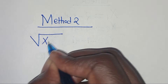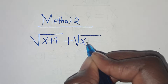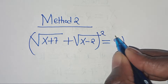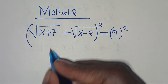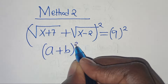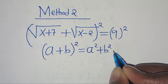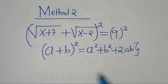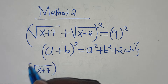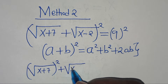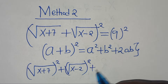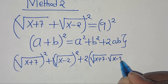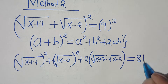In Method 2, we have the square root of x plus 7, plus the square root of x minus 2, equals 9. The first step is to square both sides. Using the algebraic identity (a+b)² = a² + 2ab + b², this gives us: (√(x+7))² plus (√(x−2))² plus 2·√(x+7)·√(x−2) equals 9 squared, which is 81.